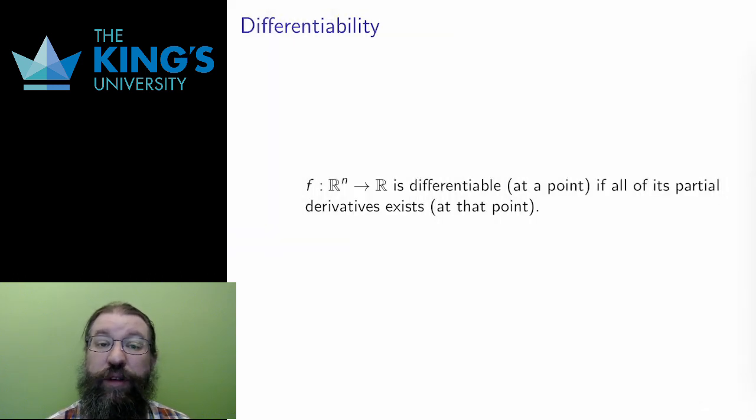A single variable function was called differentiable if its derivative existed. Here, there are now several derivatives, the partials. So a scalar field is differentiable at a point if all of its partials exist at that point. If the partials in even one variable fail, then the function is not differentiable.